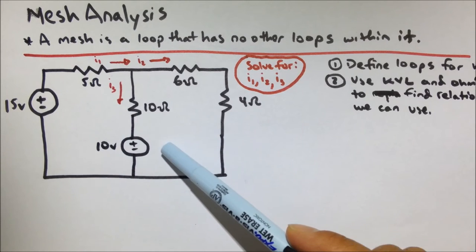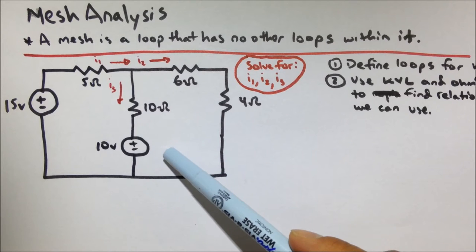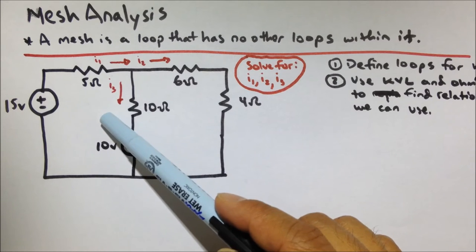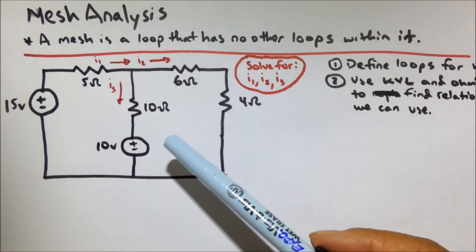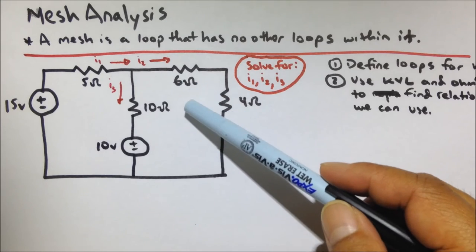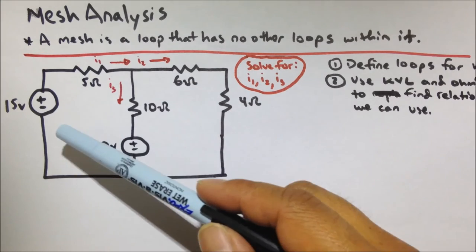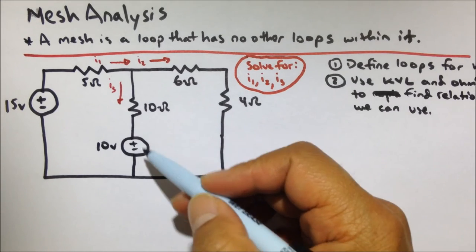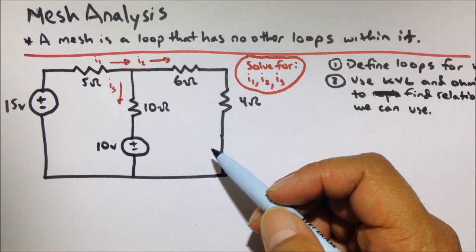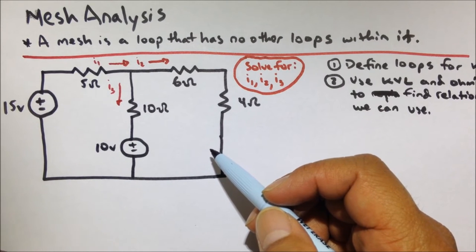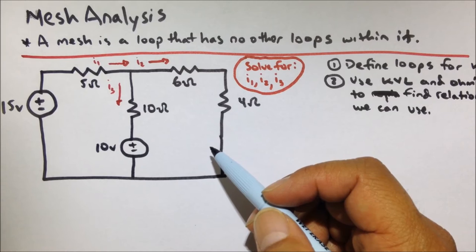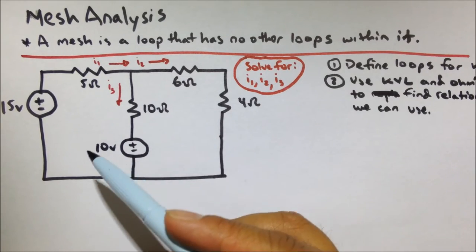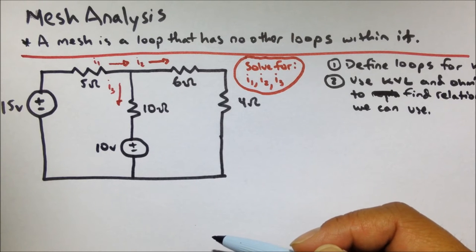There's no other loops inside here, so those would be meshes. And then we can use the analysis of those meshes to solve for unknowns. So looking at loops like that should remind you of Kirchhoff's voltage law. One of the things we will do is use Kirchhoff's voltage law and Ohm's law to find relationships between unknowns and knowns so that we can solve for what we want.